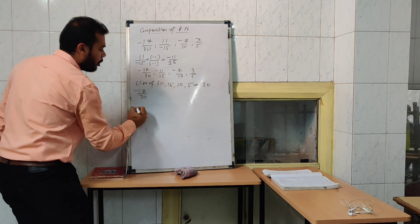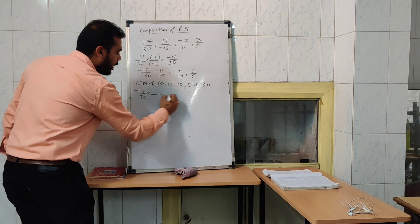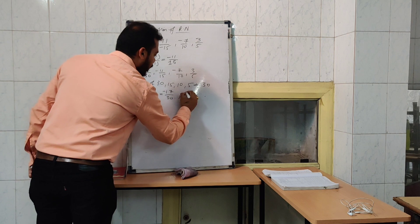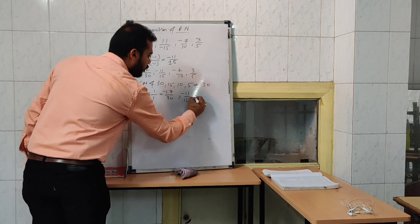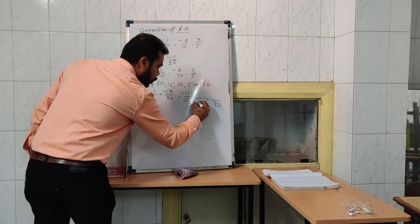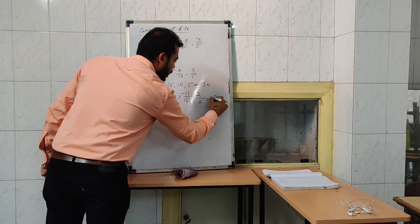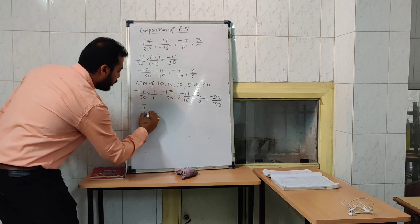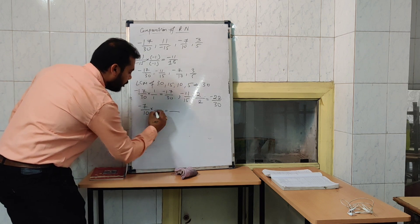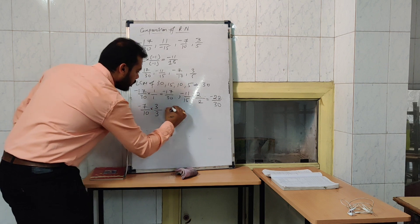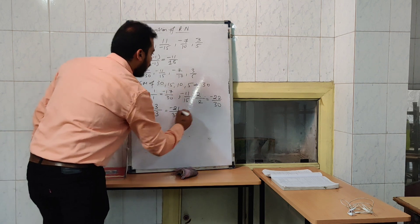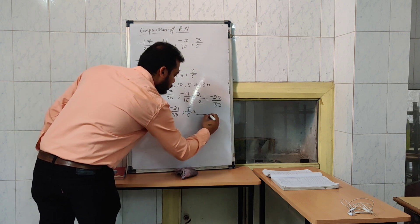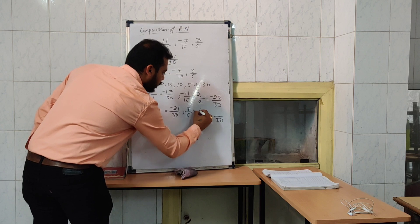For minus 17 by 13, what do we multiply? 1. Then for minus 11 by 15, what do we multiply to make it 30? That is 2 — so that is minus 22 by 30. Then minus 7 by 10 — what do we multiply? 3 — it will become minus 21 by 30. And 3 by 5 — that is 6 — so 18 by 30.